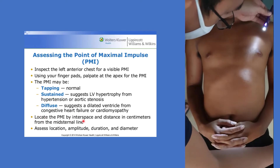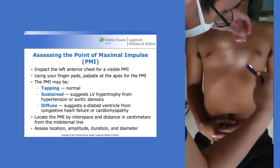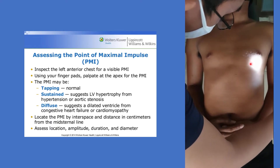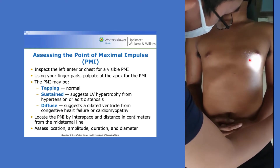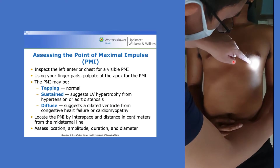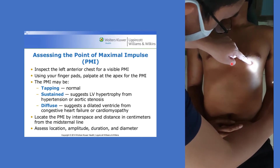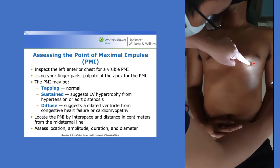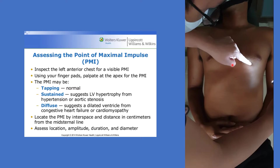Locate the PMI by interspaces, determining whether it is at the 5th, 6th, or 7th interspace, and measure the distance in centimeters from the mid-sternal line. Use a ruler or tape measure from the mid-sternal area to the PMI. Assess the location, amplitude, duration, and diameter.